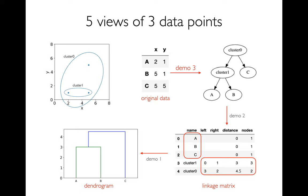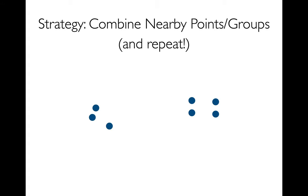In this video, I want to put everything together by actually going from data to a tree using the agglomerative clustering algorithm. The strategy is pretty simple: I start with a bunch of points and keep combining similar, nearby points until I end up with a single cluster.